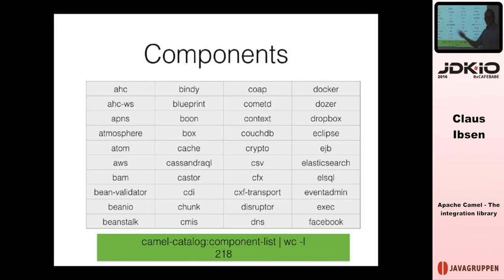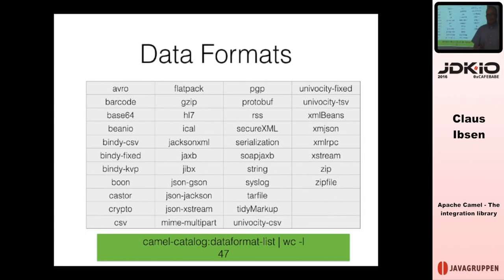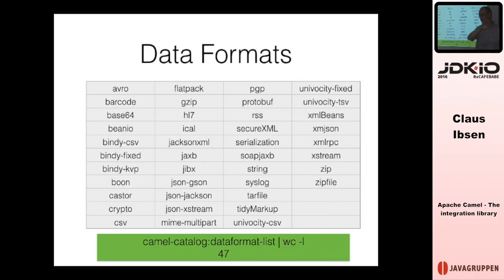We have a Camel catalog that includes all kinds of information about Camel. You can query it for how many components there are — the answer is 218. That number depends on how you count: for example, the Amazon Web Services component contains about 10 subcomponents depending on which Amazon service you use. There are also 47 data formats — these allow you to transform a message from a well-known form to another, like XML to Java, JSON, CSV, and also compression/decompression and encryption. You have 'marshal' and 'unmarshal' operations.